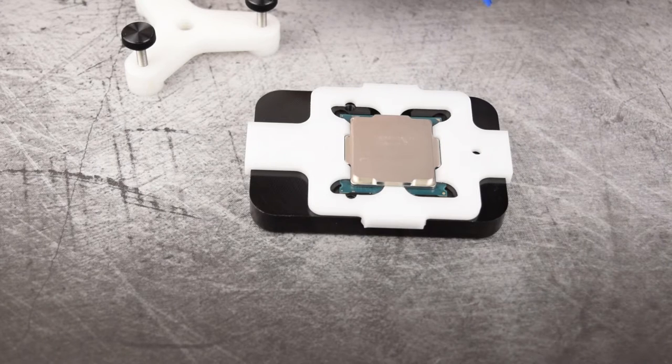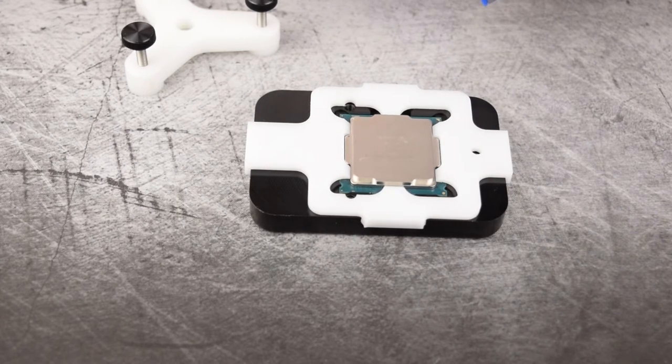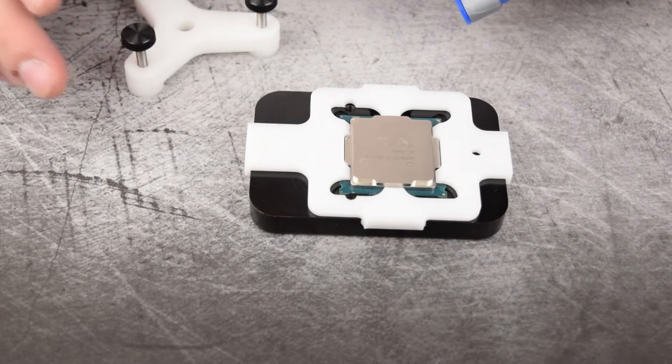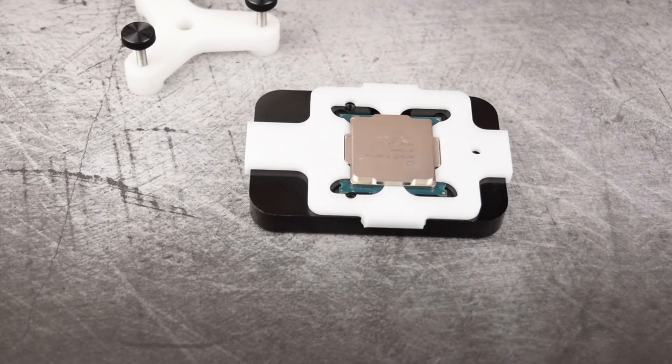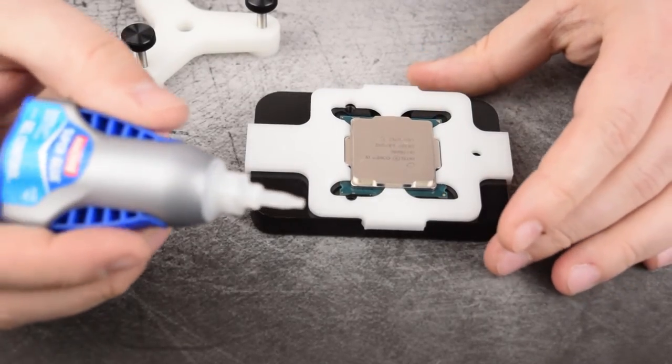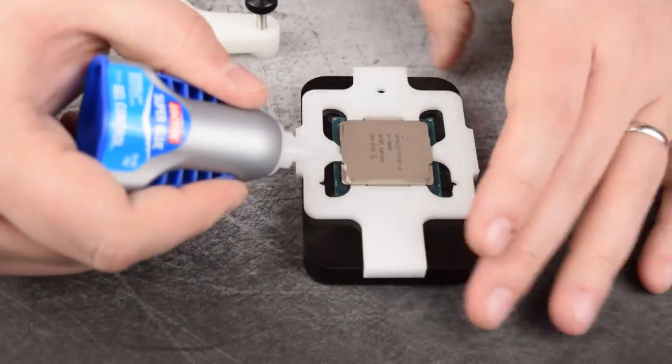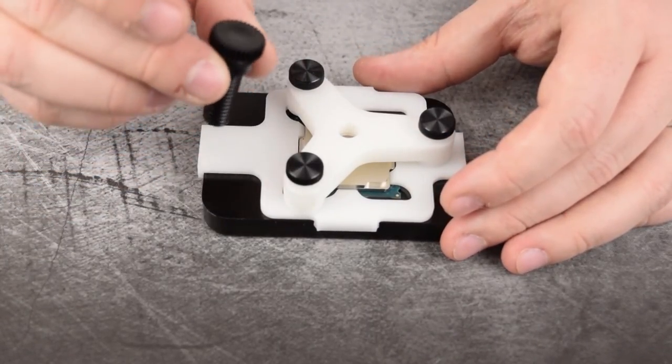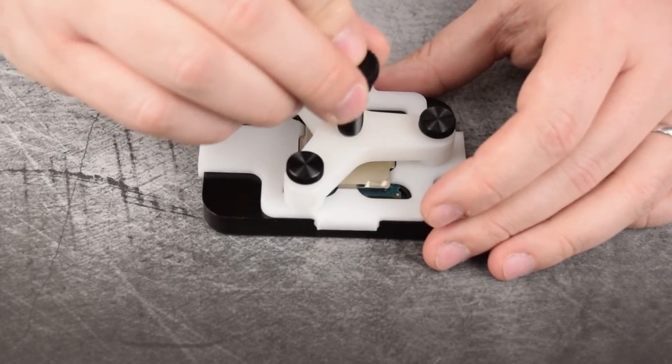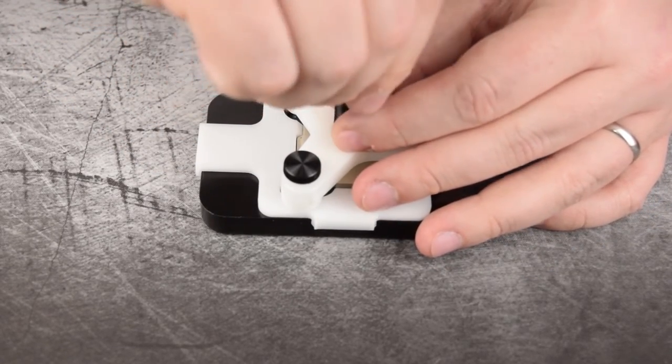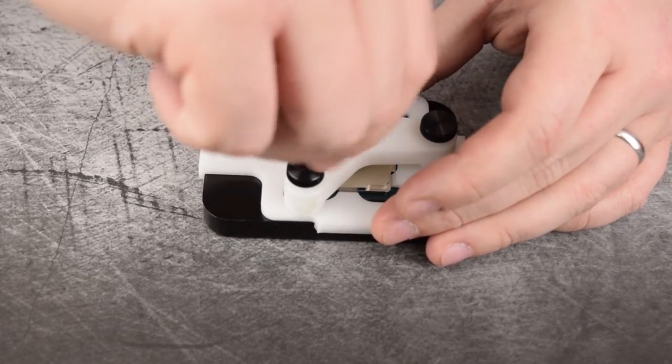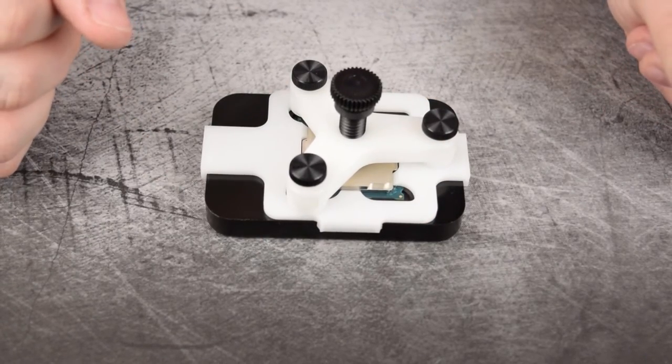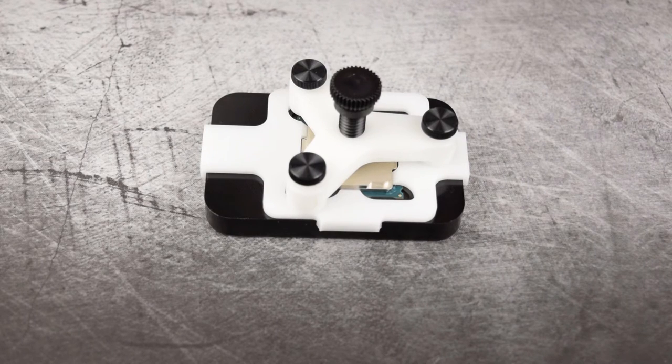I use Loctite super glue. It is the gel control and that does make a difference. Some people prefer not to glue the IHS back on. Some people do. I'm one that does prefer it unless I'm going to direct die cool, in which case I wouldn't put the IHS back on at all. For this purpose, we're going to go ahead and use the glue. And what we'll do is just put a dab at each corner. And the last piece to the puzzle is this pressure screw. So this is going to screw straight down into the middle. And this will be what holds the pressure on the IHS as the glue dries. Just finger tight, enough to snug it down. Now that we're here, we're going to leave this for two hours to allow the glue to cure. And then it'll be ready to go back into the computer.